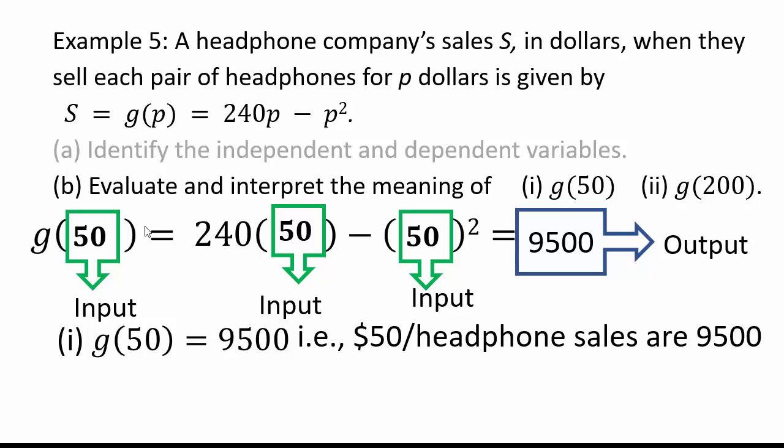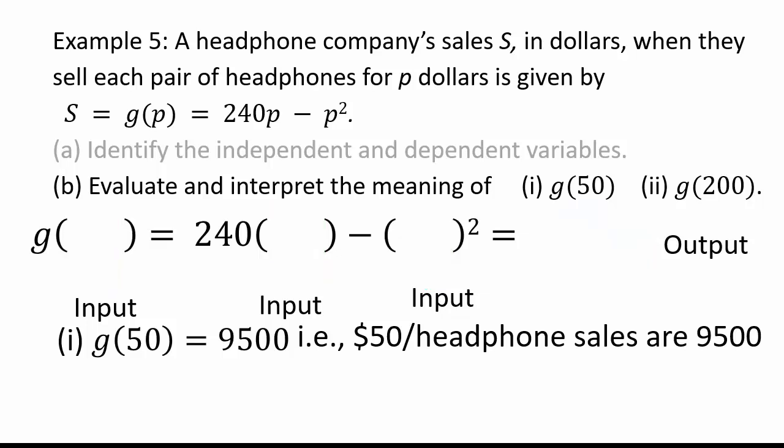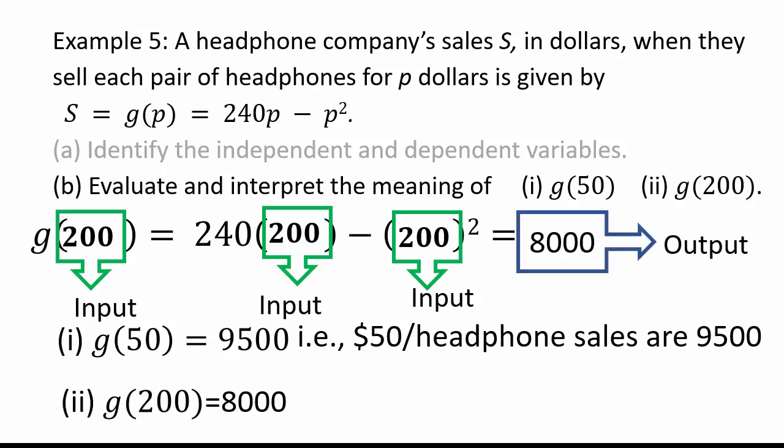All right, go ahead compute g of 200. So all the inputs now will get replaced with 200. Use your calculator. Tell me what that is. Someone says 8000. So that's correct. g of 200 would be 8000.